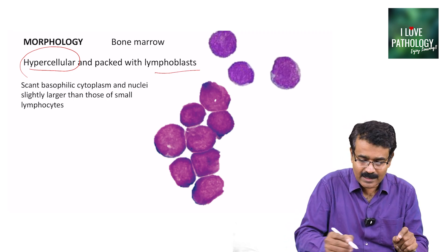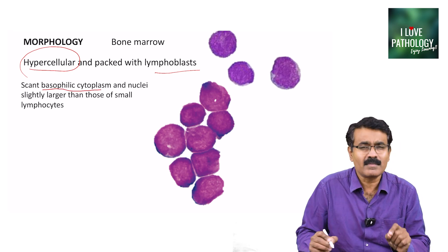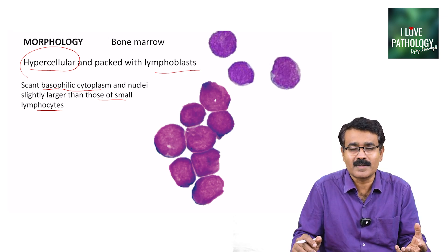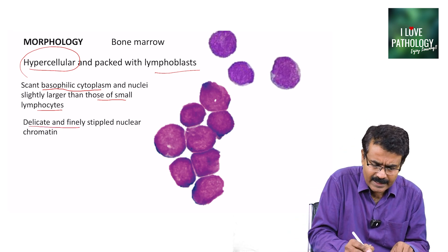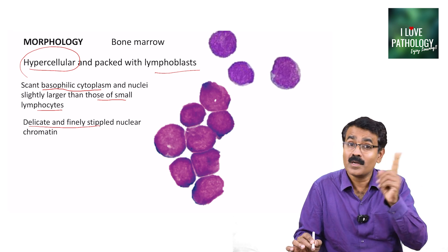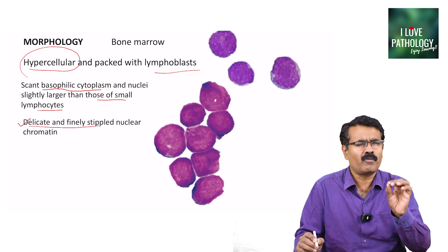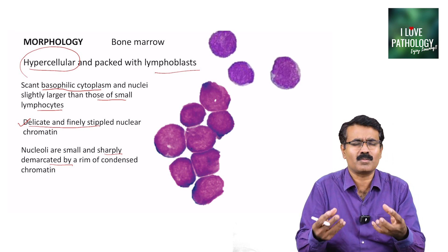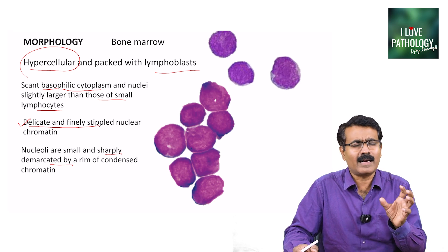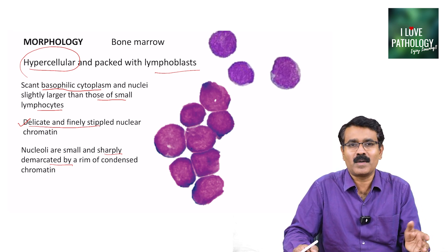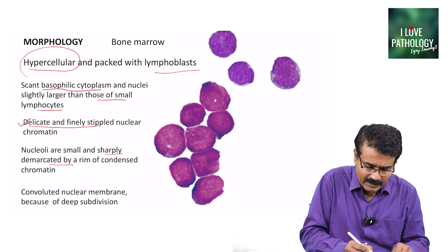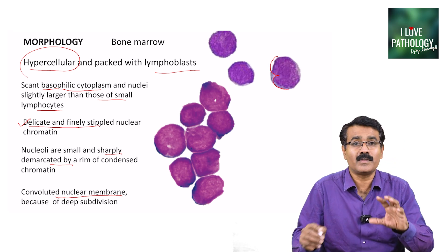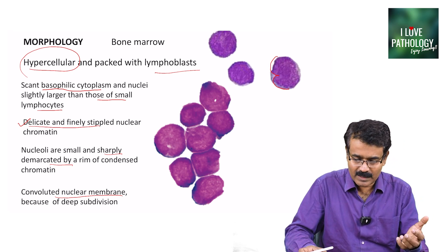How do you appreciate lymphoblasts? These are large cells with a scant basophilic cytoplasm and nuclei slightly larger than those of small lymphocytes — sometimes it is difficult to appreciate this. They have a very delicate and finely stippled nuclear chromatin, in contrast to myeloblasts. The nuclei are very small, sharply demarcated by a thin rim of condensed chromatin — small, inconspicuous nucleoli. Sometimes you can also see convolutions of the nuclear membrane because of deep division, which is another feature of lymphoblasts in bone marrow or peripheral smear.